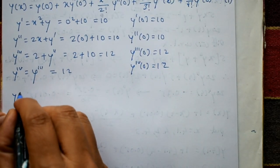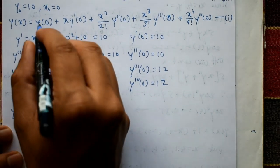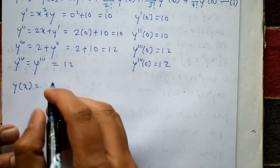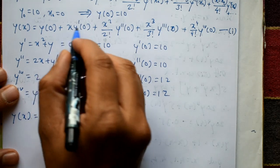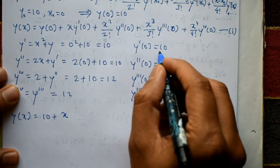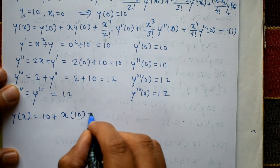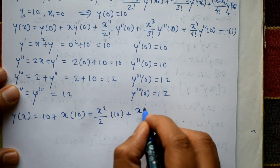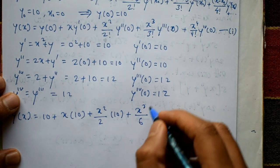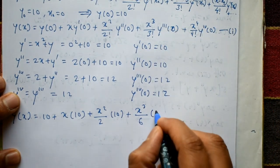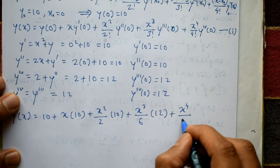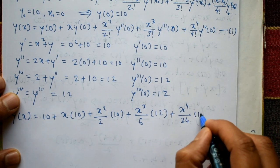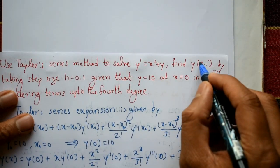Now substituting all these values into equation 1: y(x) = 10 + x·10 + (x²/2)·10 + (x³/6)·12 + (x⁴/24)·12. Simplifying, since 3 factorial is 6 and 4 factorial is 24.